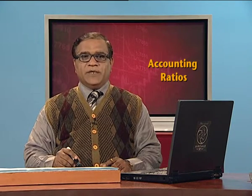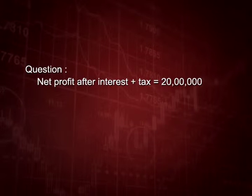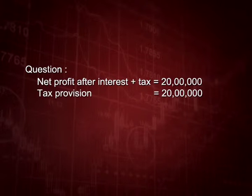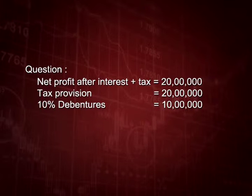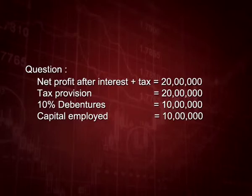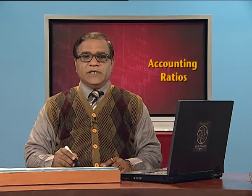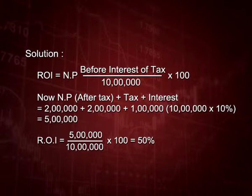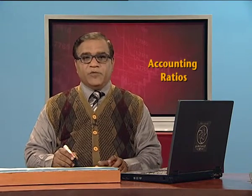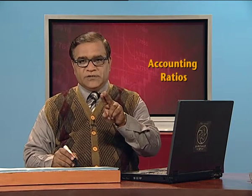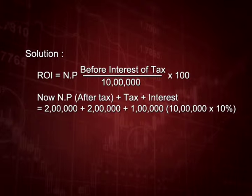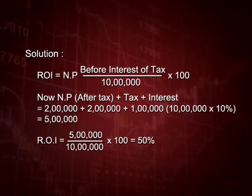Let us start another question on return on capital employed. Net profit after interest and tax is 2 lakh, tax provision is 2 lakh, and there are 10 percent debentures of 10 lakh. Return on investment equals net profit before interest and tax divided by capital employed, multiplied by 100. Since the profit given is after interest and tax, we add back tax provision of 2 lakh and interest of 1 lakh (10 percent of 10 lakh), giving 5 lakh. Dividing 5 lakh by capital employed of 10 lakh and multiplying by 100 gives 50 percent.